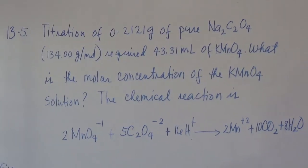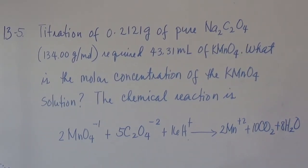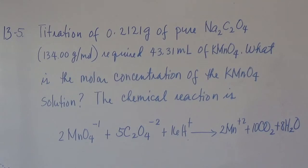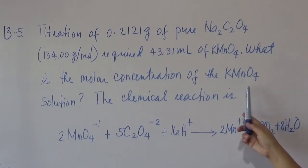Problem 13.5. Again, this is a titration problem. You are given here 0.2121 grams of sodium oxalate, so that is our analyte. It requires 43.31 mL of potassium permanganate for a complete reaction. In this case, this is a redox reaction. The question here is: what is the molar concentration of permanganate?